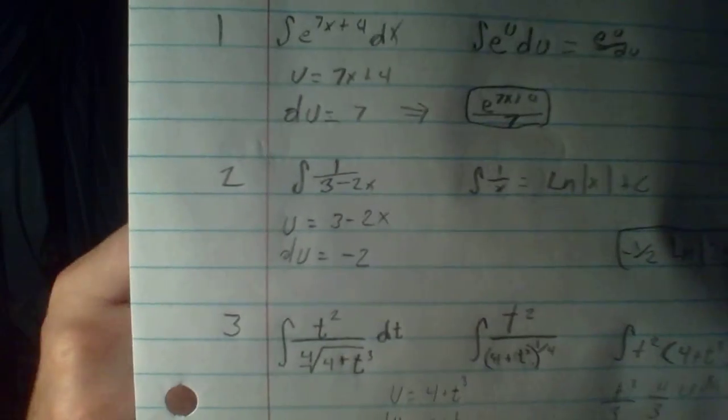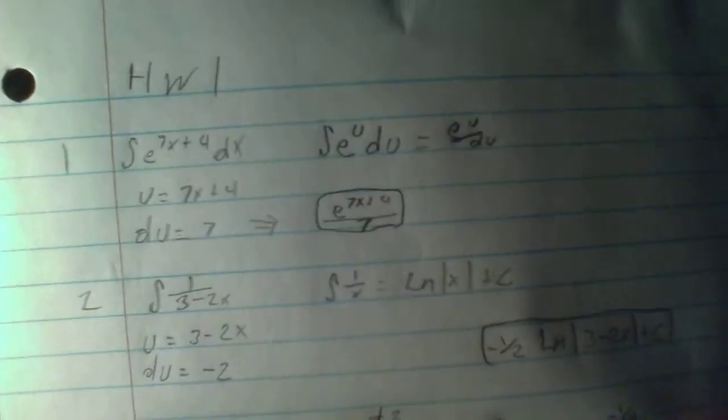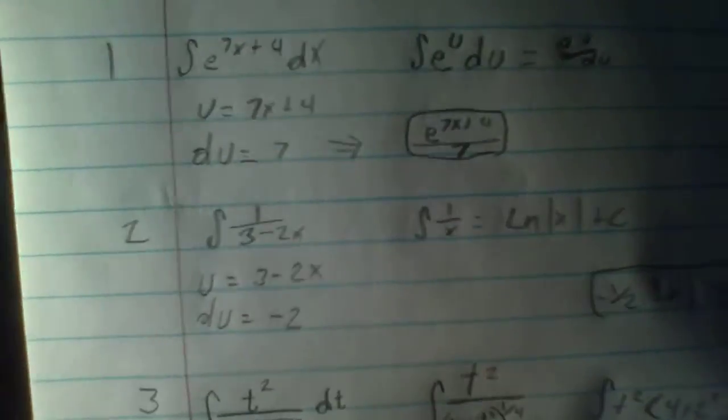The integral of 1 over 3 minus 2x—since it's 1 over x, that's just going to be ln of x. We'll see. There, that's it.